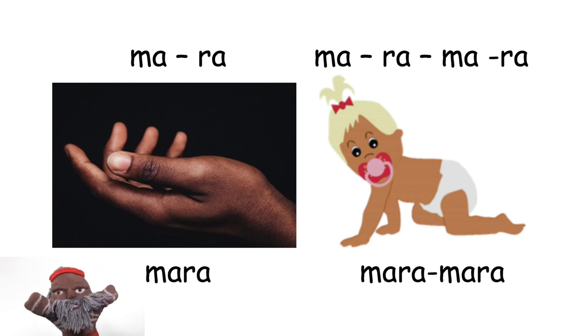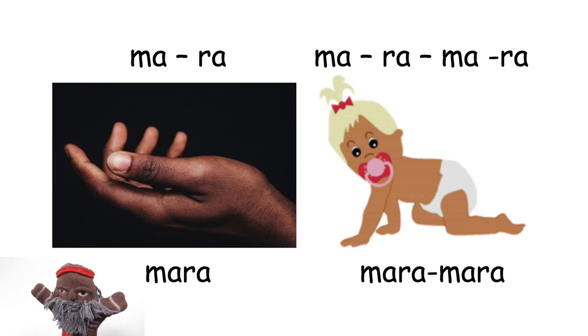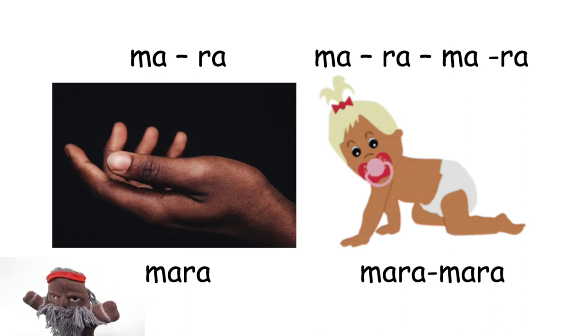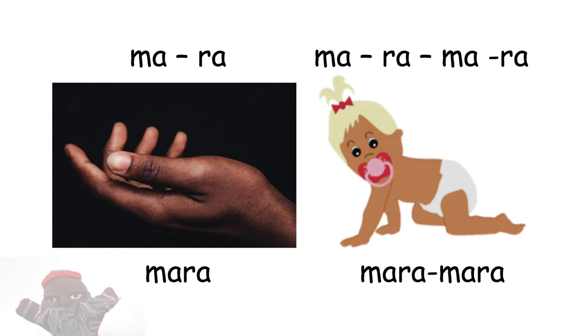For example, a mara is a hand. A maramara is a baby that's just starting to crawl on their hands.